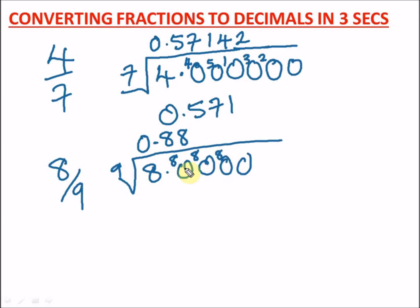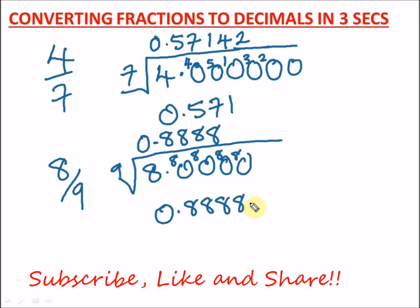And 9 in 80 again is going to give us an 8 and a balance of 8, and it's going to go on and so on. So you can just drop your answer, it depends on how the examiner asks you to approximate. So our answer for this is 0.8888.